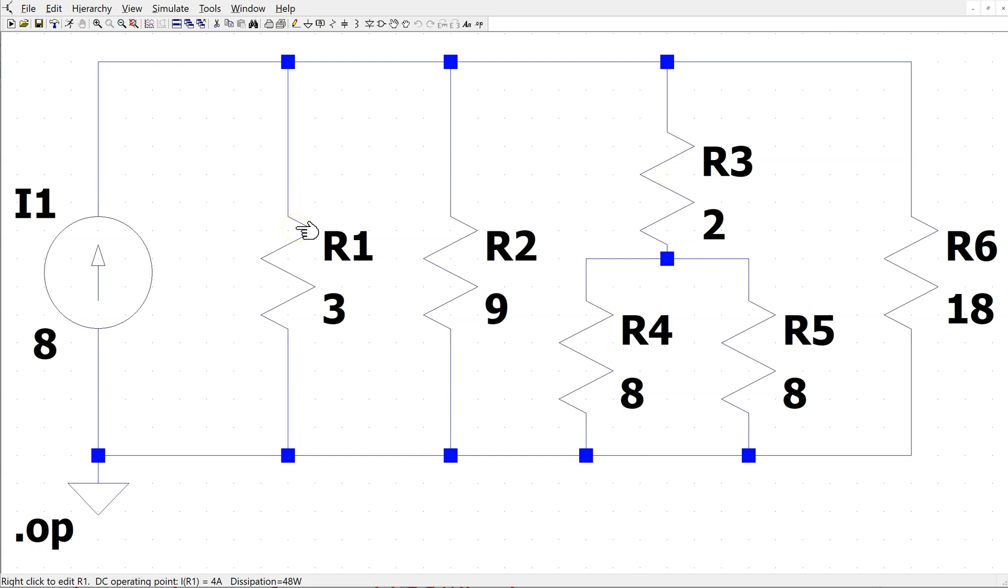We can see that I1 is 4 amps, I3 is 2 amps, and Ix is 1 amp. These simulated values match the calculated values.